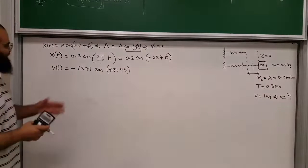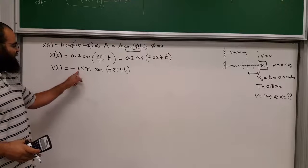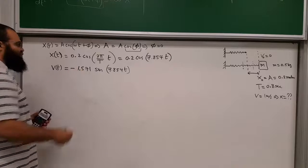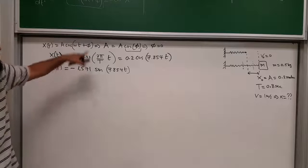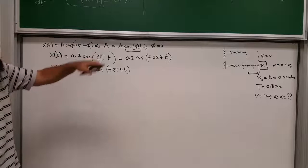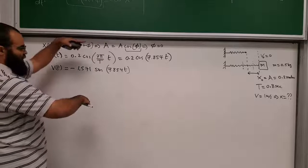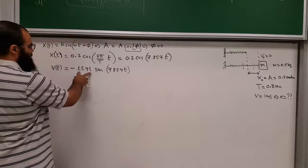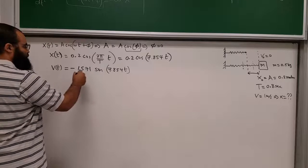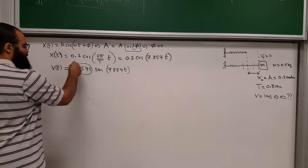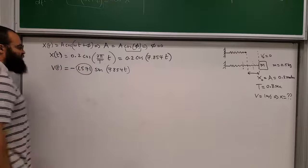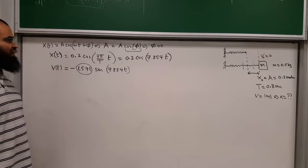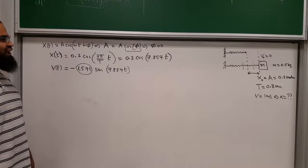So v(t) = −1.571·sin(7.854t). The maximum speed is the coefficient in front, which is 1.571 m/s. This is the amplitude of velocity — the function oscillates between +1.571 and −1.571, so the maximum speed is 1.571 m/s, which is indeed greater than 1.